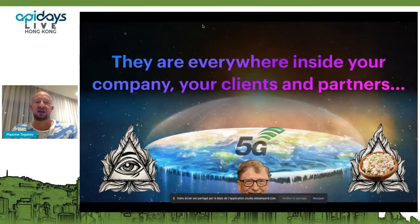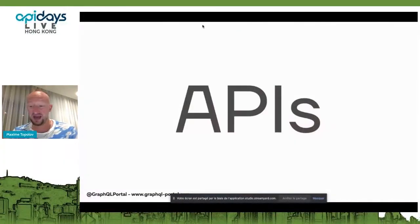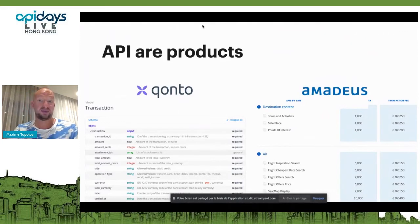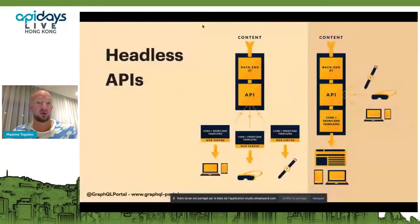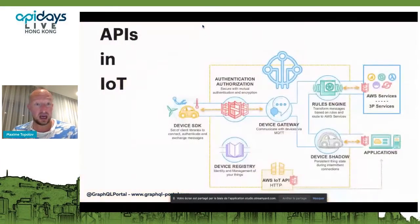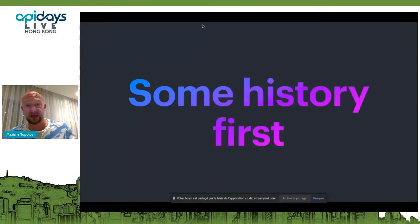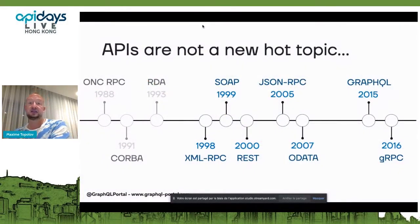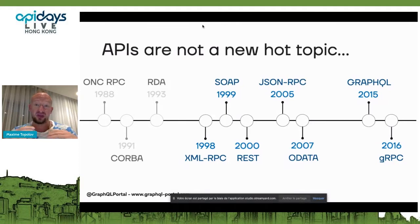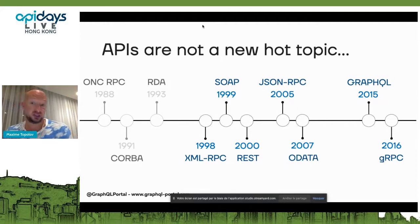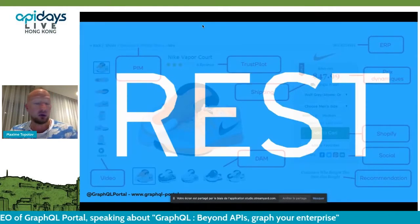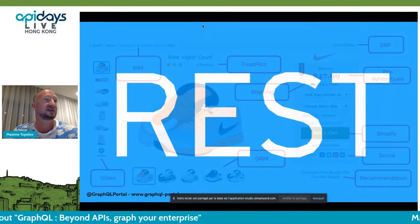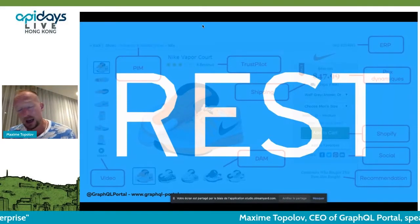If you think of APIs, they are absolutely everywhere — inside your company, their clients, your partners. APIs are products. We are in API days after all. APIs are in your microservices, in headless architecture, and IoT is full of APIs too. If we take a little bit of history, APIs is not a new hot topic — it's been here for many, many years. And right now we see the dominance of REST APIs; almost every single product in the world has REST API support.